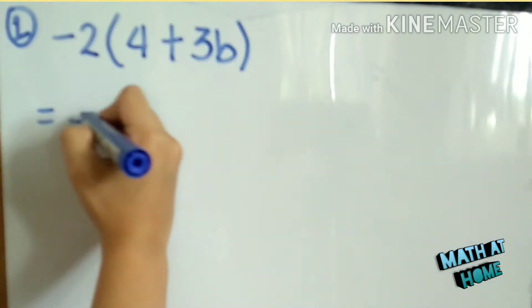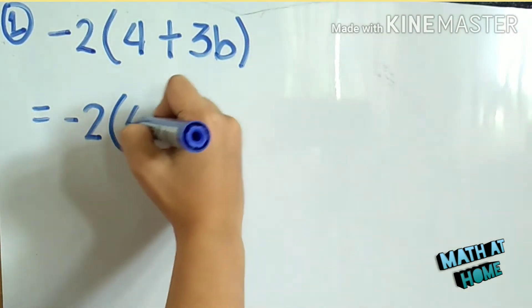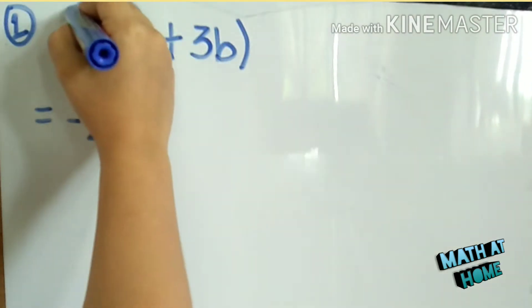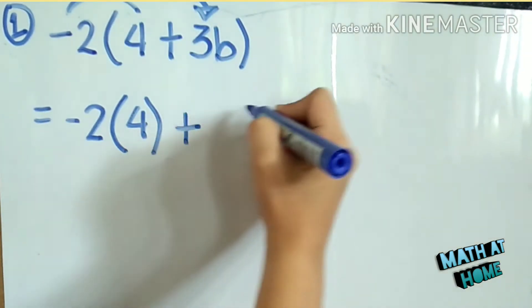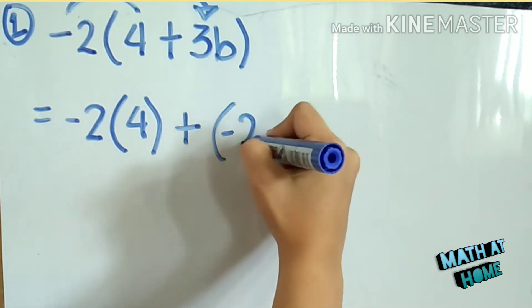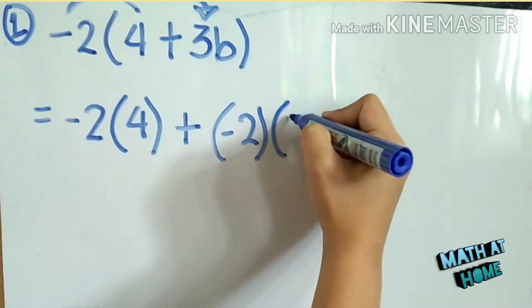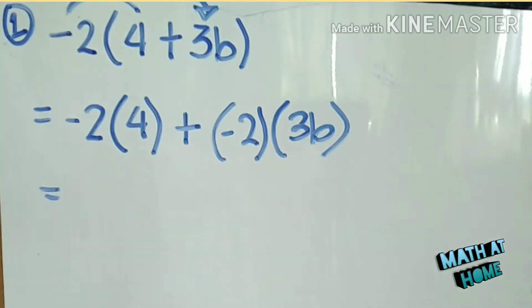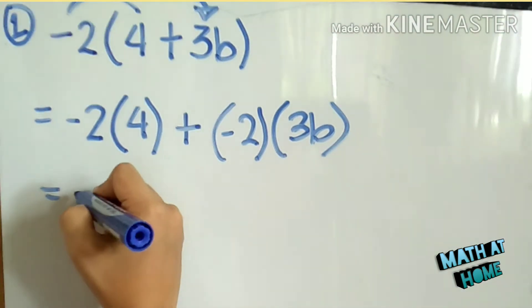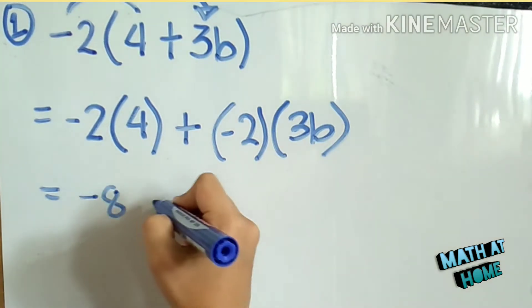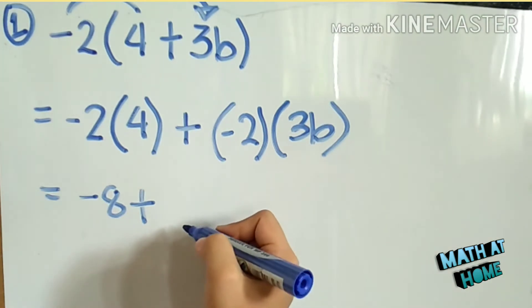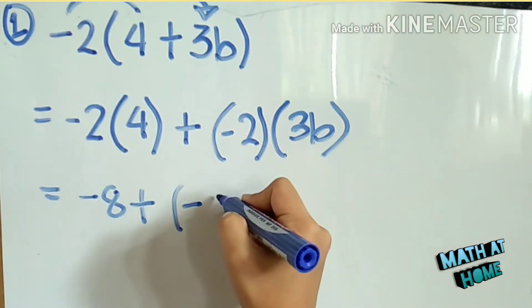So, negative 2 times positive 4 gives negative 8. Then, negative 2 times positive 3b gives negative 6b.